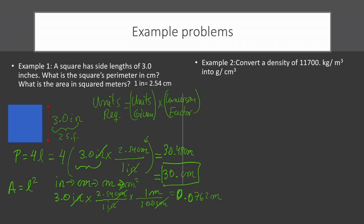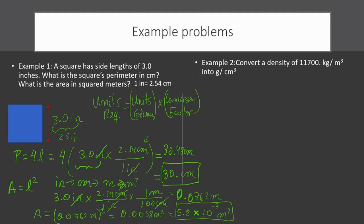Don't apply significant figures yet — do it at the very end. So after that, we need to square this to get the area. After squaring, we get 0.0058 meters squared, which has two significant figures. This can also be written in scientific notation as 5.8 times 10 to the negative 3 meters squared, having two significant figures as desired.